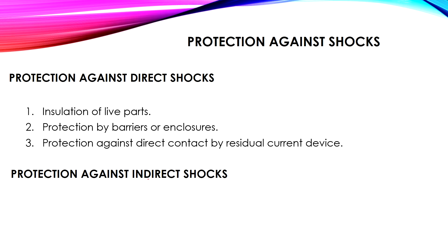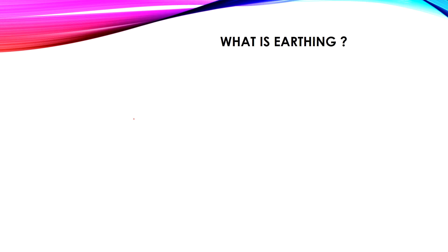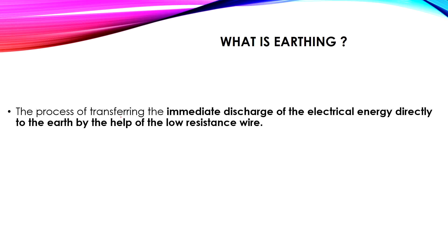Protection against indirect shocks is achieved through earthing, which we will discuss in this video. Earthing is the process of transferring the immediate discharge of electrical energy directly to the earth using a low-resistance wire. We give the leakage current a path through the earth via a low-resistance wire, preventing it from flowing through the human.